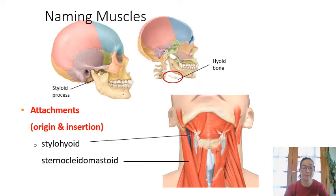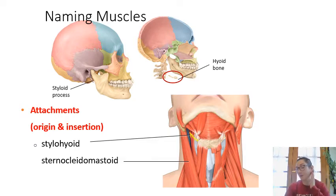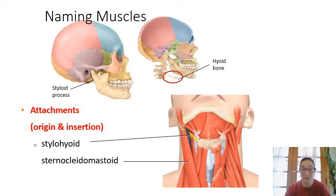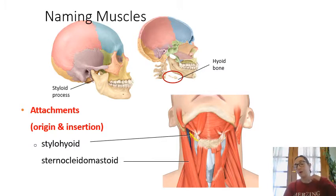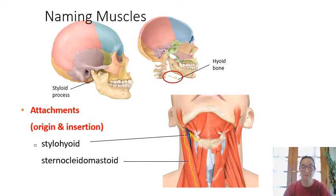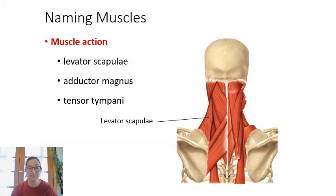Sometimes muscles are named after their attachments — where they originate and where they insert. For example, stylohyoid connects from the styloid process of the temporal bone to the hyoid bone in the neck. Sternocleidomastoid is a mouthful, but we can sort it out: it goes from your sternum, past the clavicle (cleido), all the way up to the mastoid process of the temporal bone. So: sternum, clavicle, mastoid process.